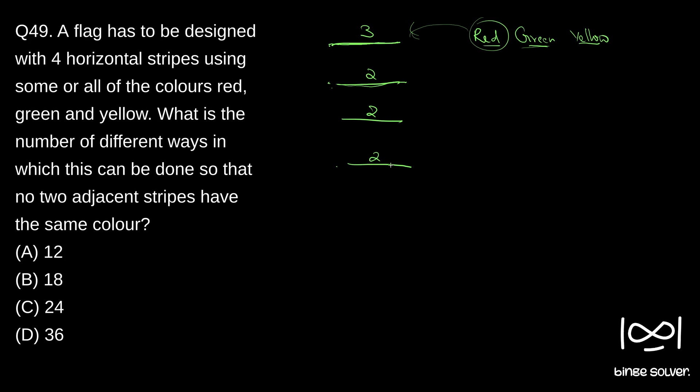So what is the total number of ways we can paint these four stripes? That will be 3 × 2 × 2 × 2, which is 8 × 3, which is 24. So totally 24 ways. That is the solution to Question 49, C: 24.